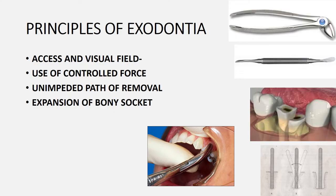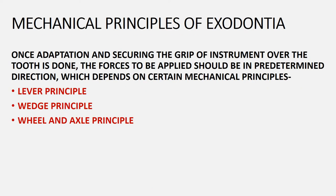After expanding the bony socket, the tooth is removed with buccal and lingual movements. Those are the basic principles of exodontia. Now, for the mechanical principles: once the instrument grip is secured on the tooth, force is applied in a predetermined direction according to one of three mechanical principles — the lever principle, the wedge principle, or the wheel and axle principle.